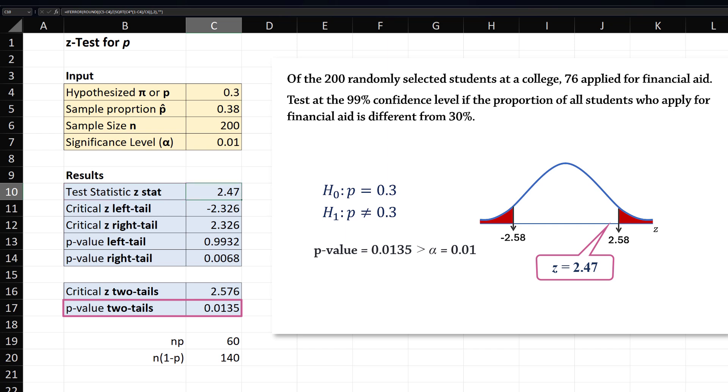The two-tailed p-value is also not less than alpha of 0.01. Recall that we reject the null hypothesis if the p-value is less than or equal to alpha. So, we fail to reject the null hypothesis in this case. That is, at alpha equals 0.01, we cannot conclude that the population proportion of all students who apply for financial aid is different from 30%.